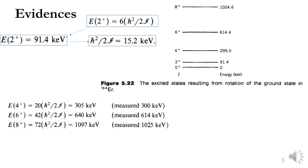We will now see two important evidences supporting the rotational effects of the nucleus. For the erbium nucleus, the excited states resulting from the rotational ground state are observed as follows: the ground state is 0+, and the 2+ state is at 91.4 keV. From this first excited 2+ state, we can calculate the ℏ²/2ℐ value using the equation. Since this is the observed value, ℏ²/2ℐ is calculated as 15.2 keV.